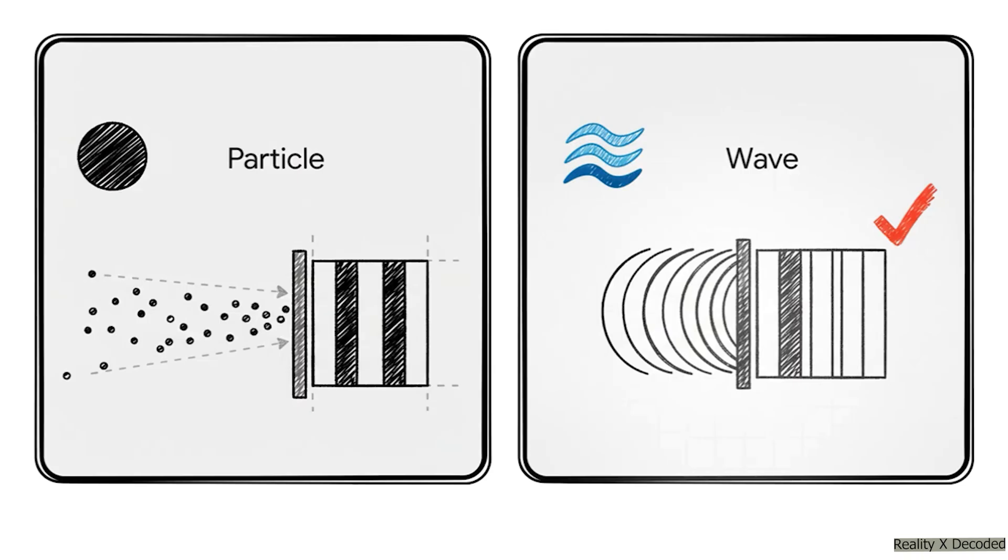But if light is a wave, like ripples in a pond, then the waves passing through those two slits are going to overlap and interfere with each other. You'd get bright spots where they add up and dark spots where they cancel out.